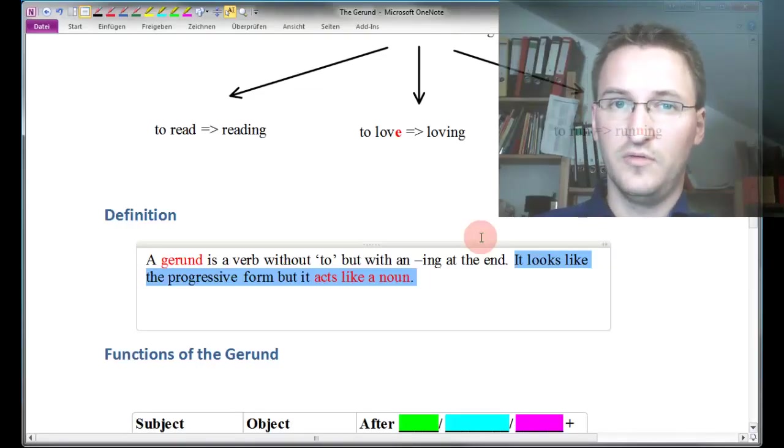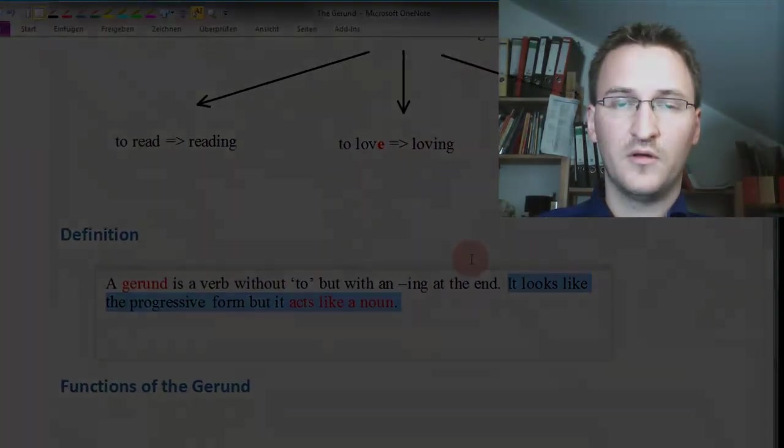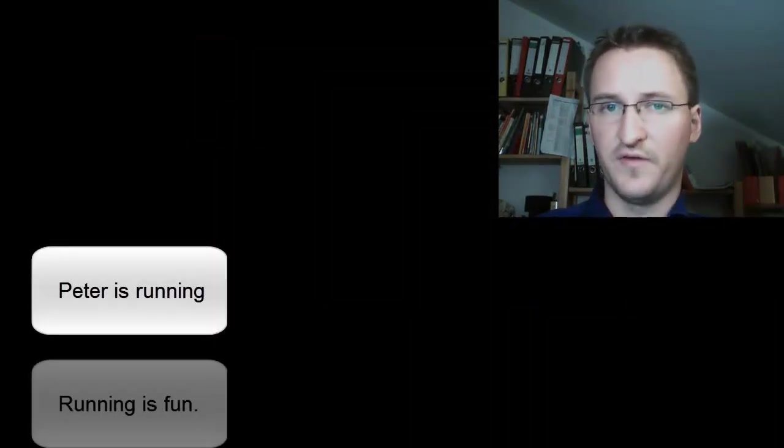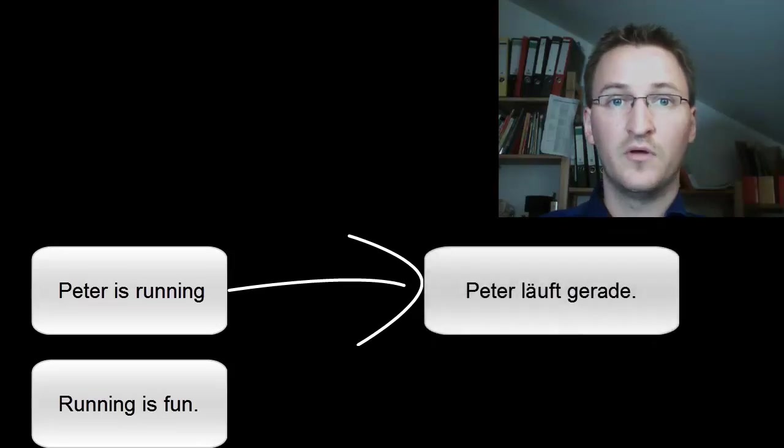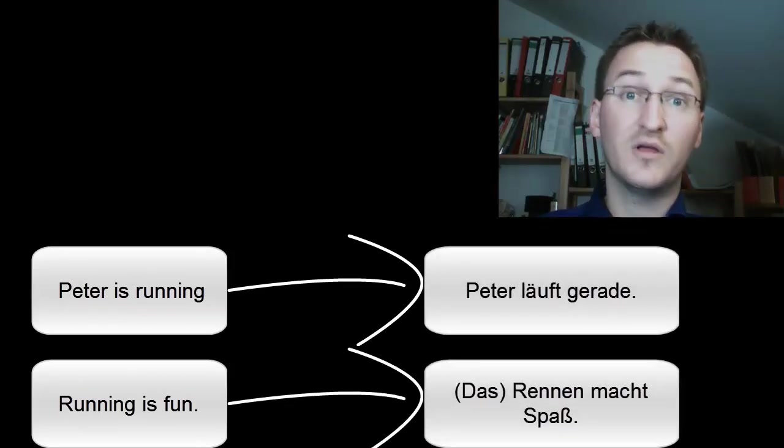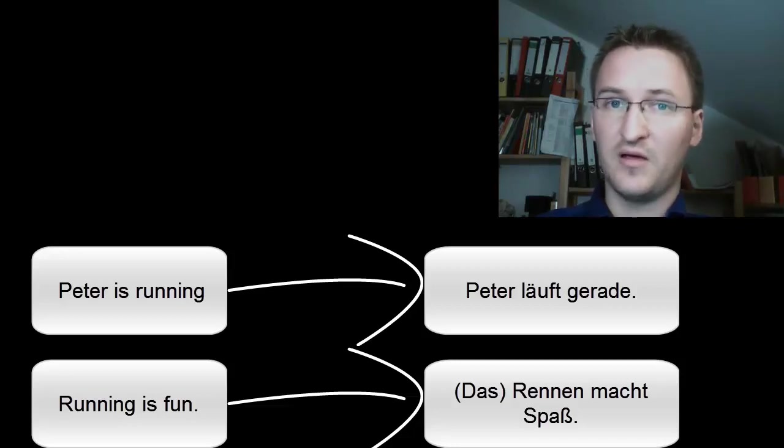There is a similar construction to the English gerund in German. It is called the Substantiviertes Verb. Let's take a look at two sentences. 'Peter is running' and 'running is fun.' Peter is running is simply a progressive form, present progressive and not gerund. Running is fun, however, is the gerund. In German, we could translate that by 'Peter läuft gerade' or 'Rennen macht Spaß.' Or we could say 'Das Rennen macht Spaß.' So it becomes really clear that Das Rennen is a Substantiviertes Verb. Das Rennen was built from a verb and now is a noun.